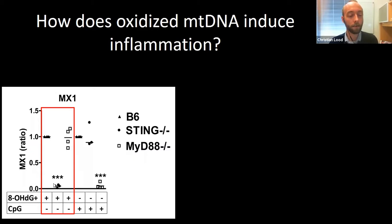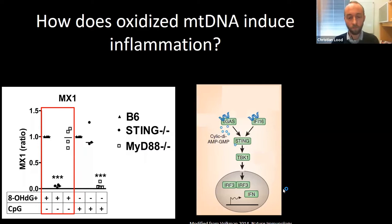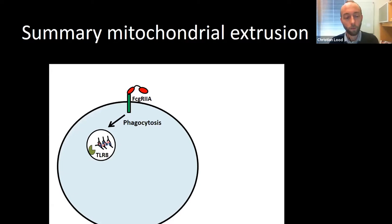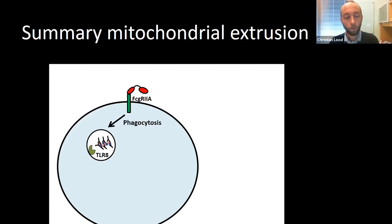In summary for this part: neutrophils can become activated and through a ROS-dependent mechanism release NETs, which are highly inflammatory. Mitochondria may be released by immune complexes or by cocaine and levamisole, and these mitochondria are highly inflammatory through their oxidized DNA, leading to interferon induction through the cGAS-STING pathway.